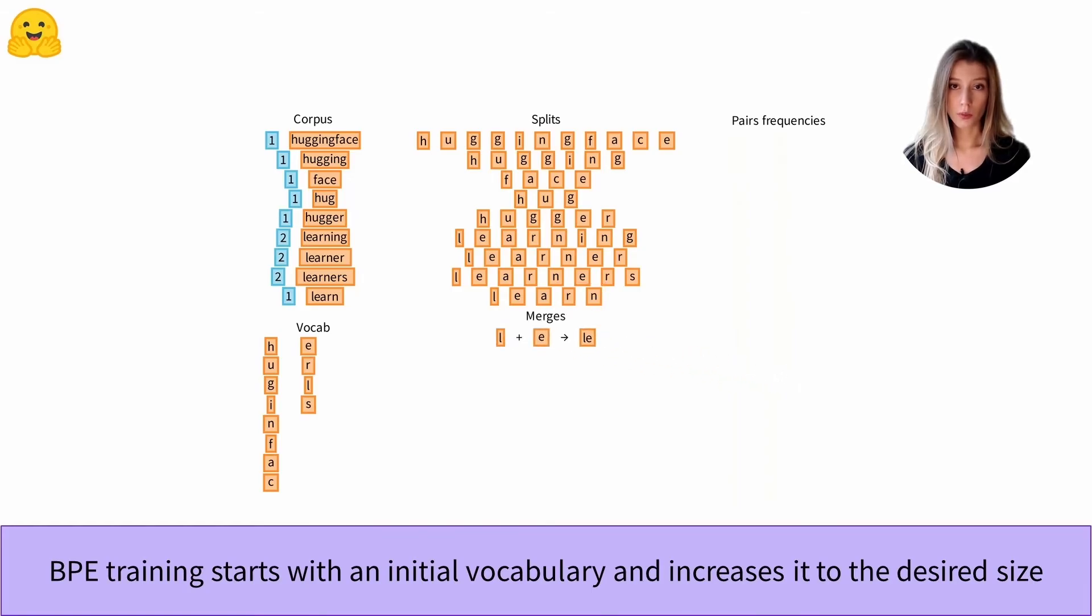We note our first merging rule and we add the new token to our vocabulary. We can then apply this merging rule to our splits. You can see that we have merged all the pairs of tokens composed of the tokens l and e.